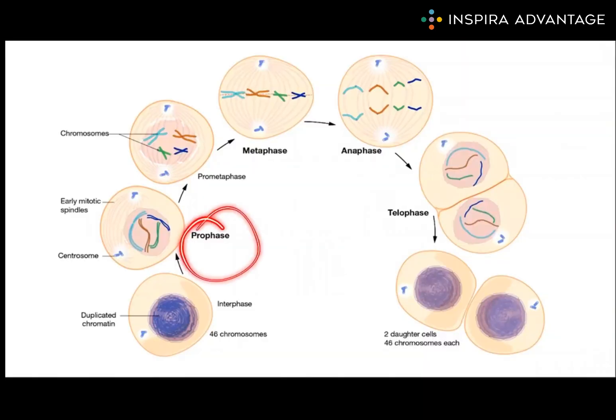During prophase, the first stage of mitosis, the nuclear envelope begins to disintegrate and the nucleolus disappears. The nucleolus is a small, dense structure found within the nucleus that is involved in the production of ribosomes. As prophase progresses, the chromatids, or replicated chromosomes, also become visible and start to condense. Chromatids are formed during this process of DNA replication, when the DNA molecule is copied so that each daughter cell receives an identical set of genetic instructions.